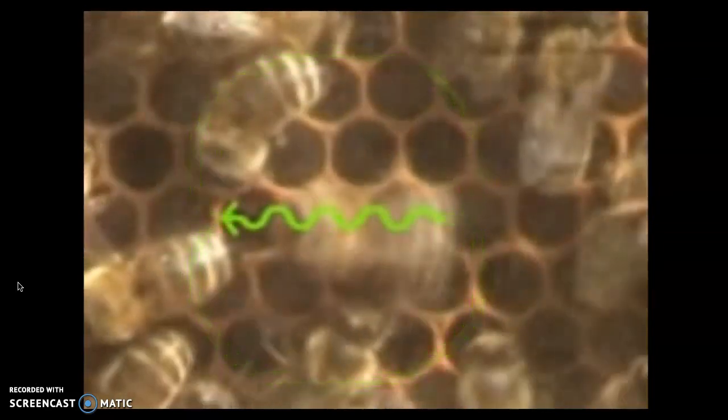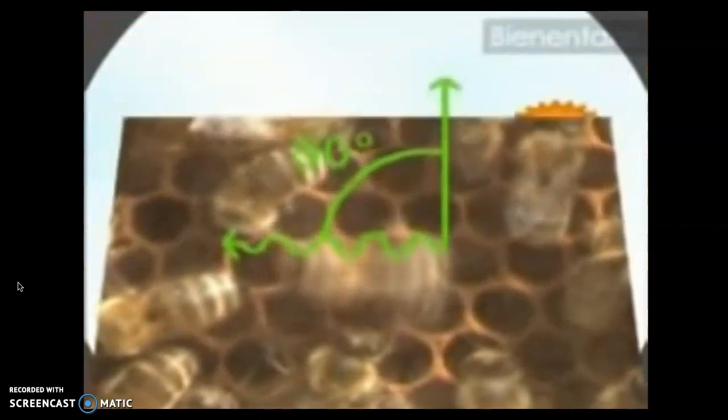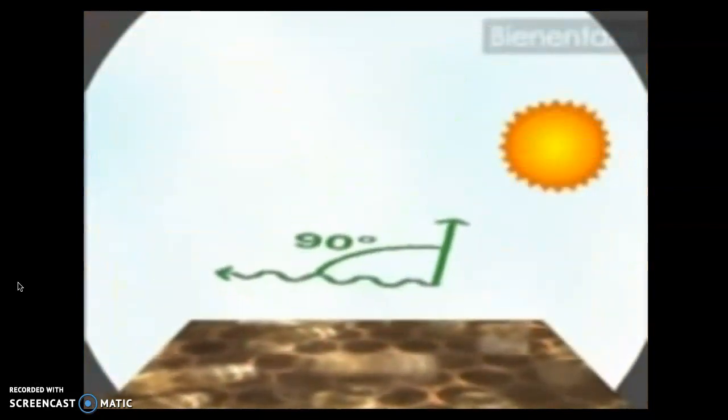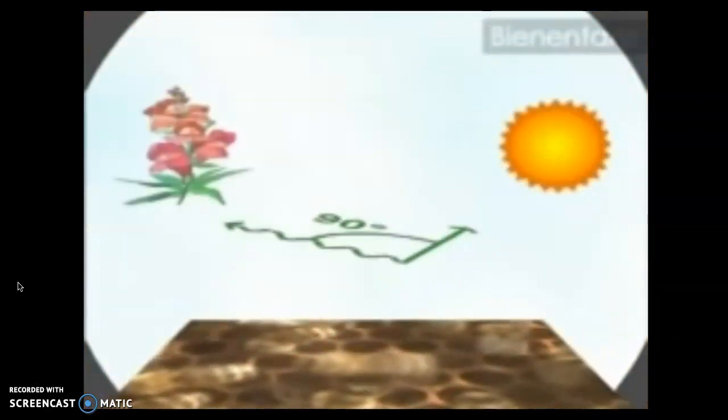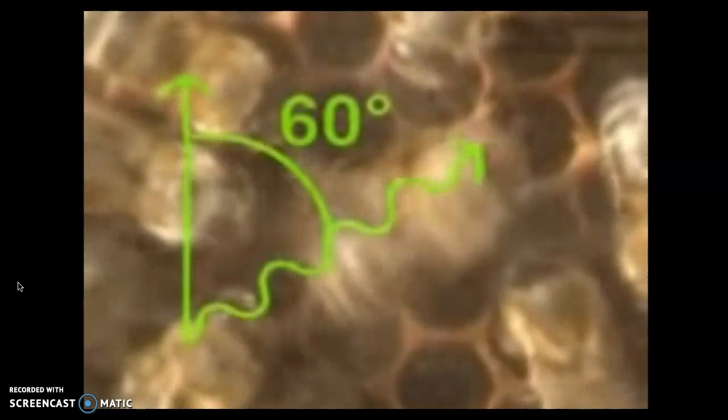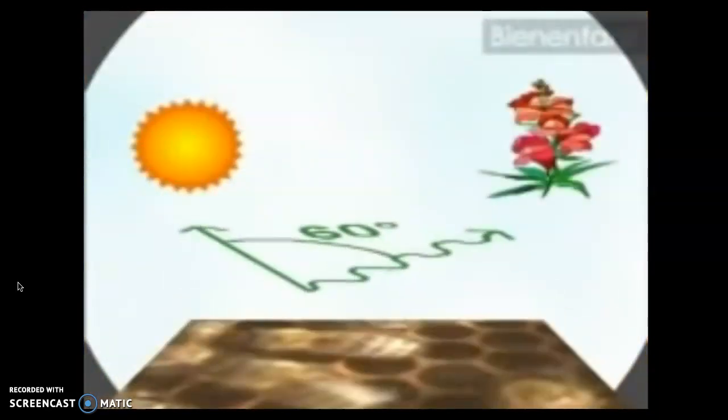The secret lies in the direction of the straight run, or to be more precise, in the angle between the straight run and the perpendicular, which in this case is 90 degrees to the left. This tells the other bees that food is available 90 degrees to the left of the sun. If the angle is 60 degrees to the right, they'll be flying 60 degrees to the right of the sun.